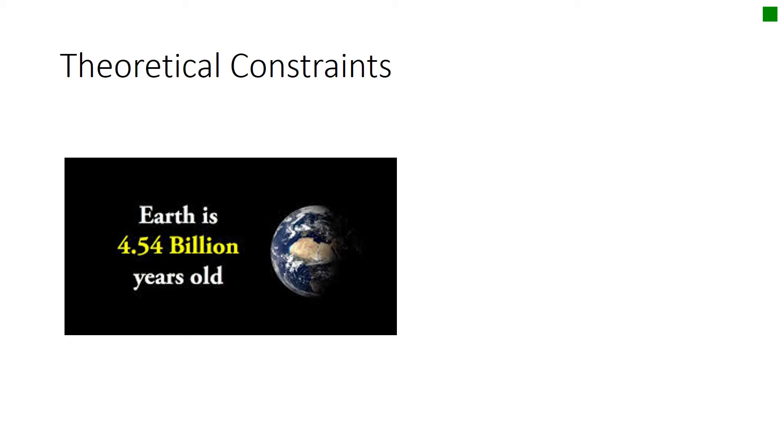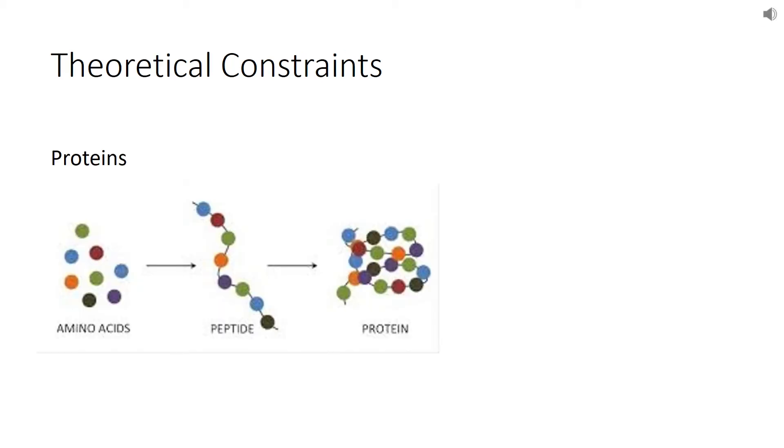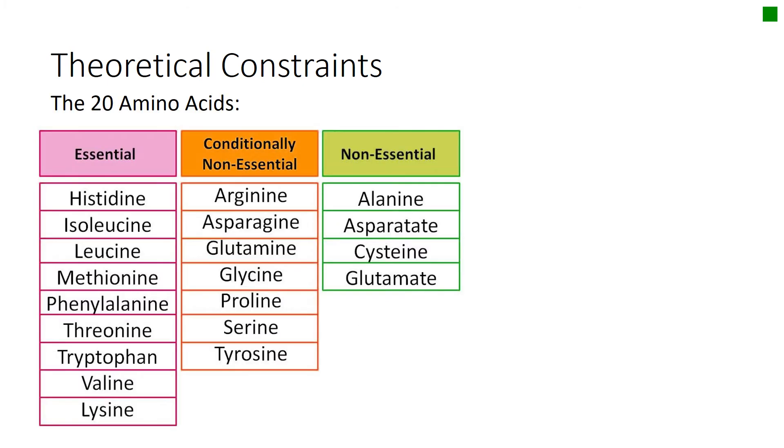It is estimated that the Earth is 4.54 billion years old. A protein is a chain of amino acids, and proteins are an essential part of living organisms. Proteins are composed of a variety of amino acids, and these are chosen from a pool of 20 amino acids.